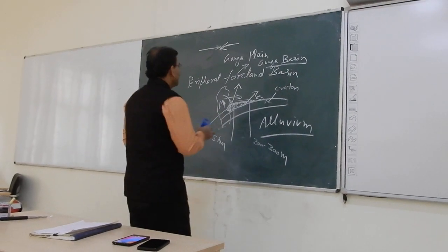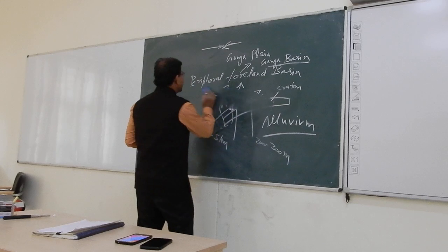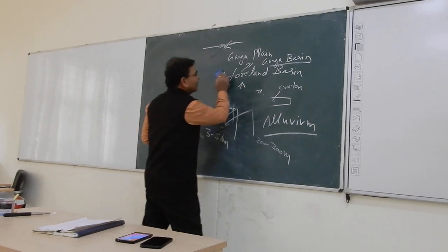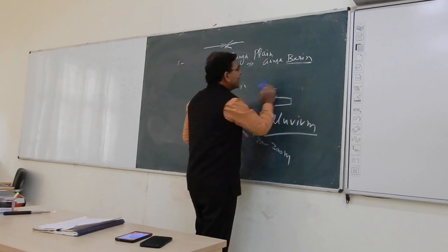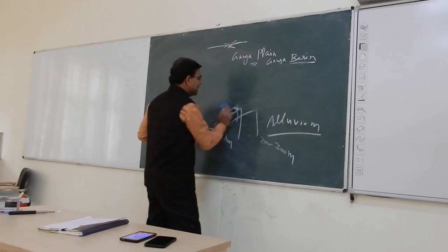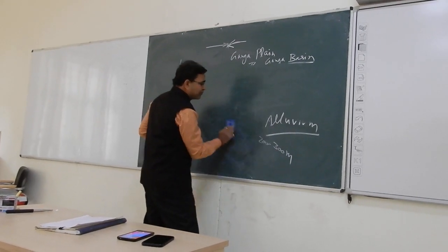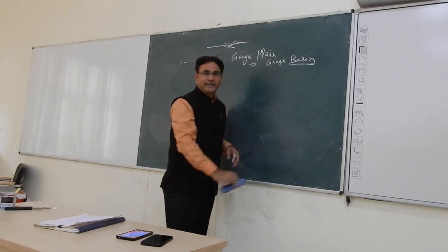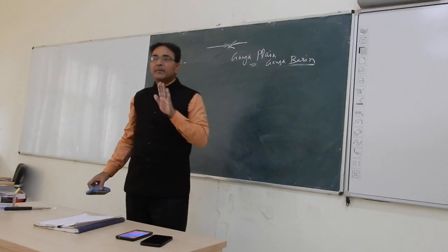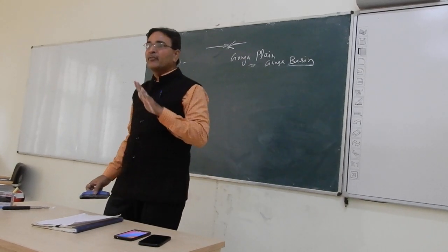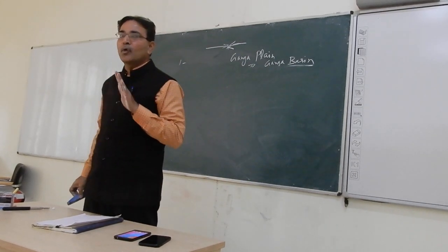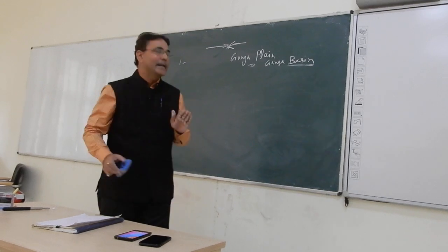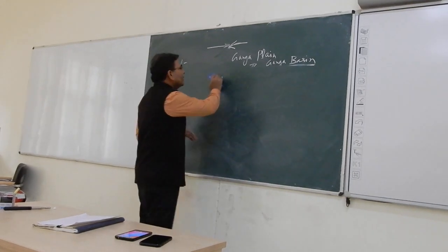The foredeep is the deepest part of the foreland basin. The deepest part of the foreland basin is known as the foredeep — F-O-R-E-D-E-E-P.